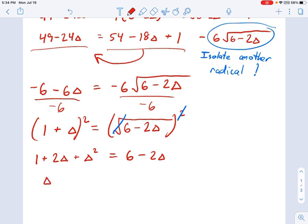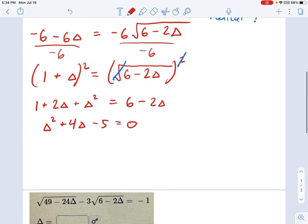I just want to collect all the terms together. So I'm going to rewrite this one. That's delta squared plus 4 delta, right, I'm bringing this guy over. And I have 1 minus 6 makes it minus 5. Okay, so that's me just combining all the like terms together on one side.